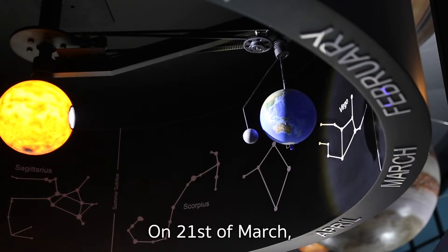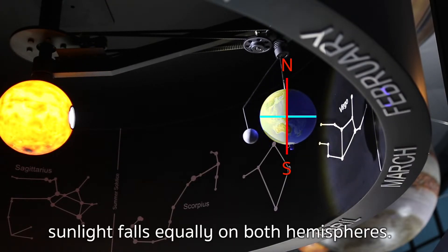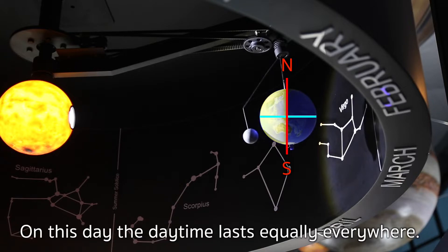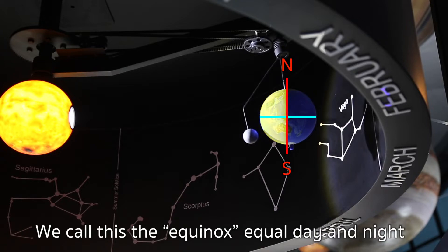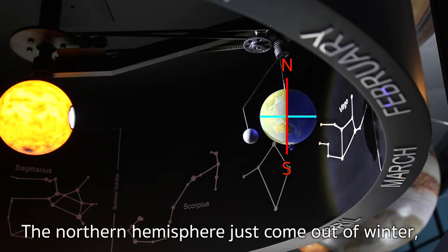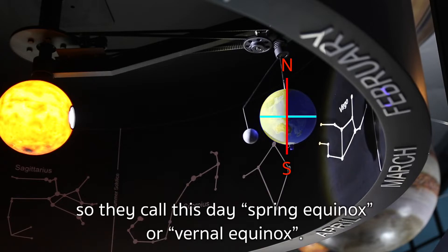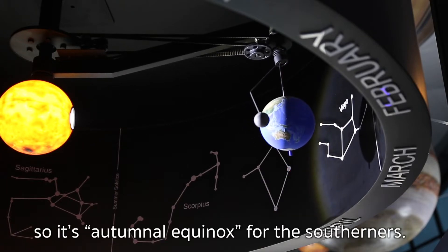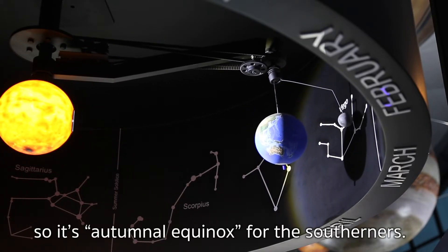On 21st of March, sunlight falls equally on both hemispheres. On this day, the daytime lasts equally everywhere. We call this the equinox, equal day and night. The Northern Hemisphere just came out of winter, so they call this day spring equinox or vernal equinox. Meanwhile, the Southern Hemisphere just went out of their peak of summer, so it's autumnal equinox for the Southerners.